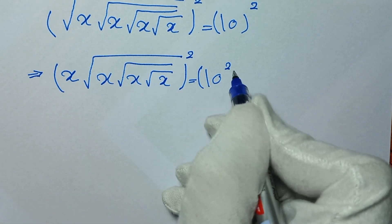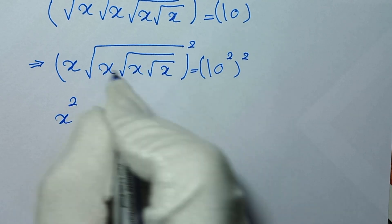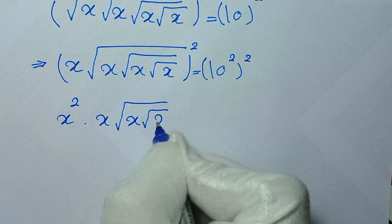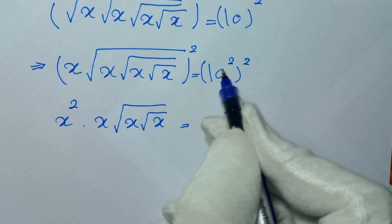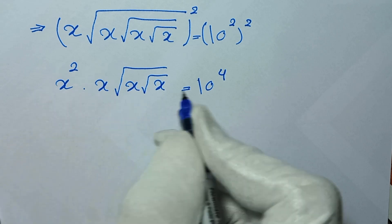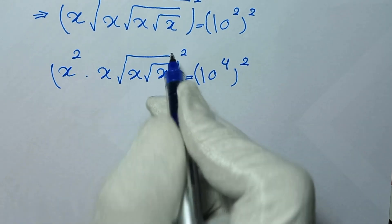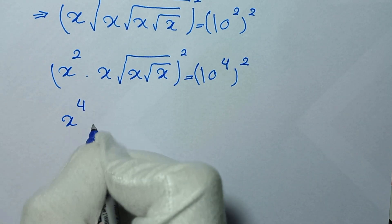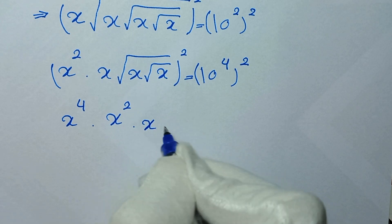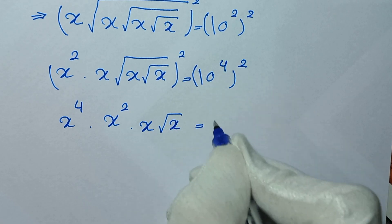In the next step we square both sides of the equation again. It will be x squared times x times square root of x times square root of square root of x equals 10 to the power of 4. We square both sides again, and it will be x squared times x times square root of x equals 10 to the power of 4 times 2, which is 10 to the power of 8.